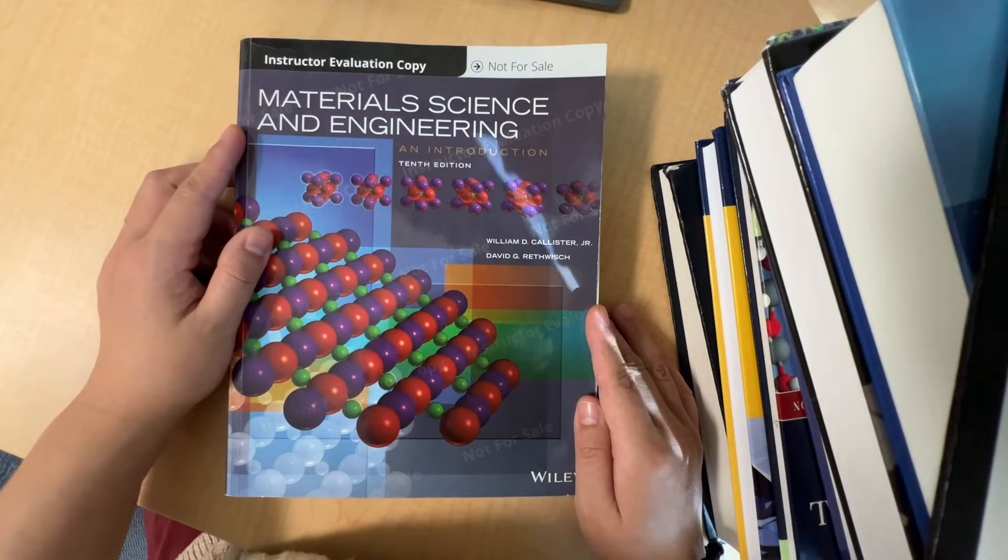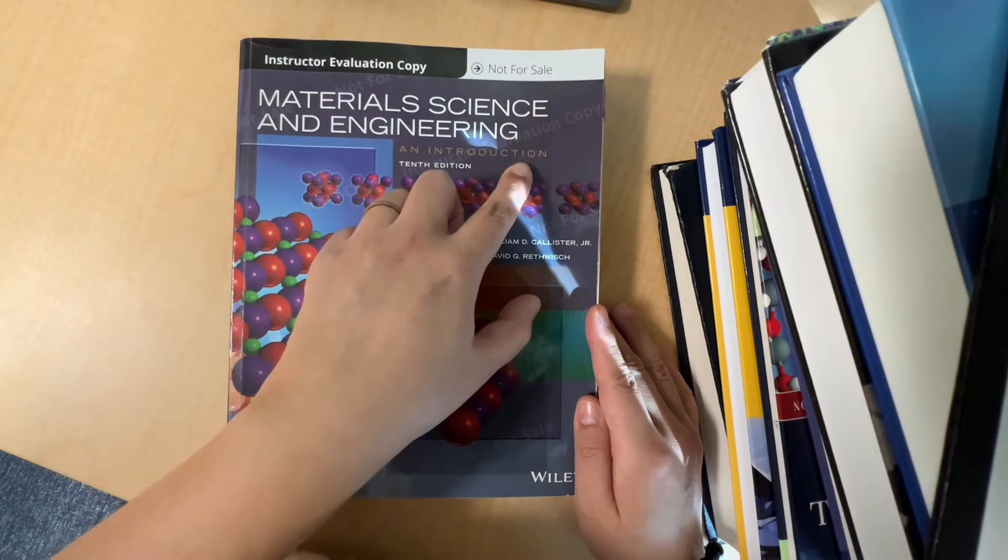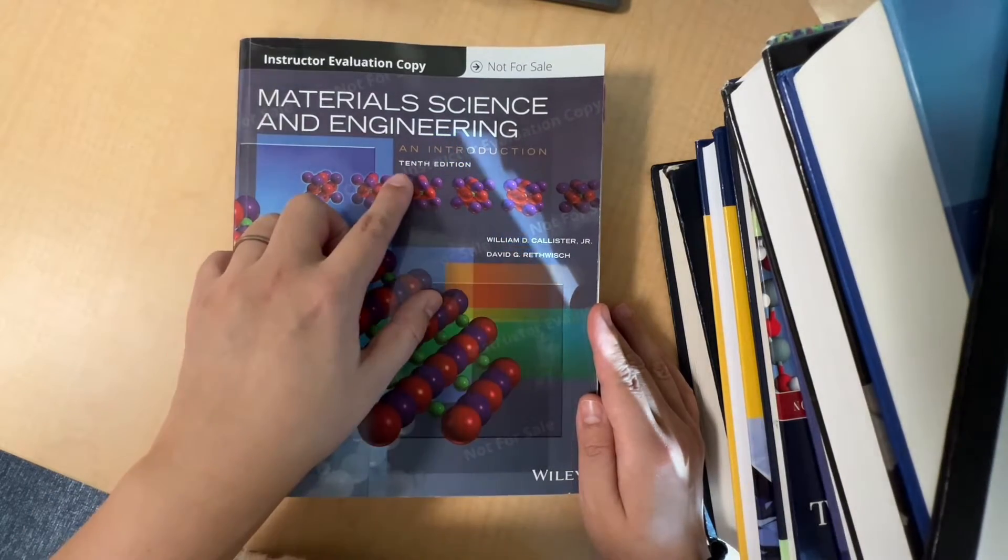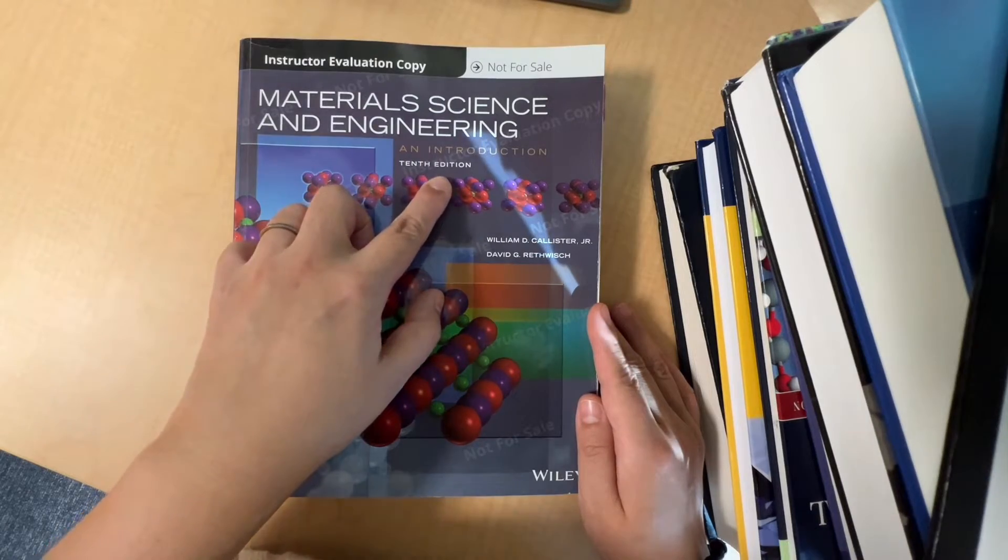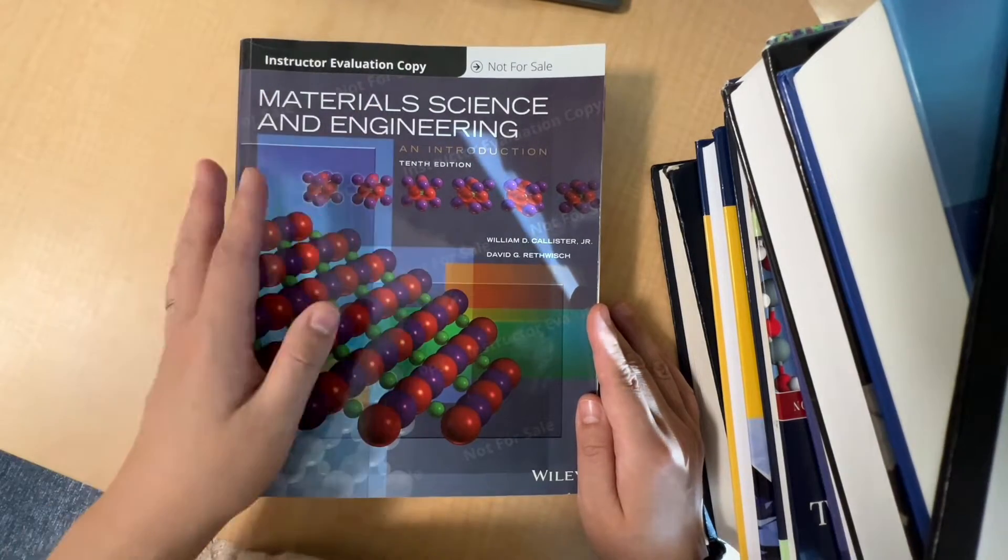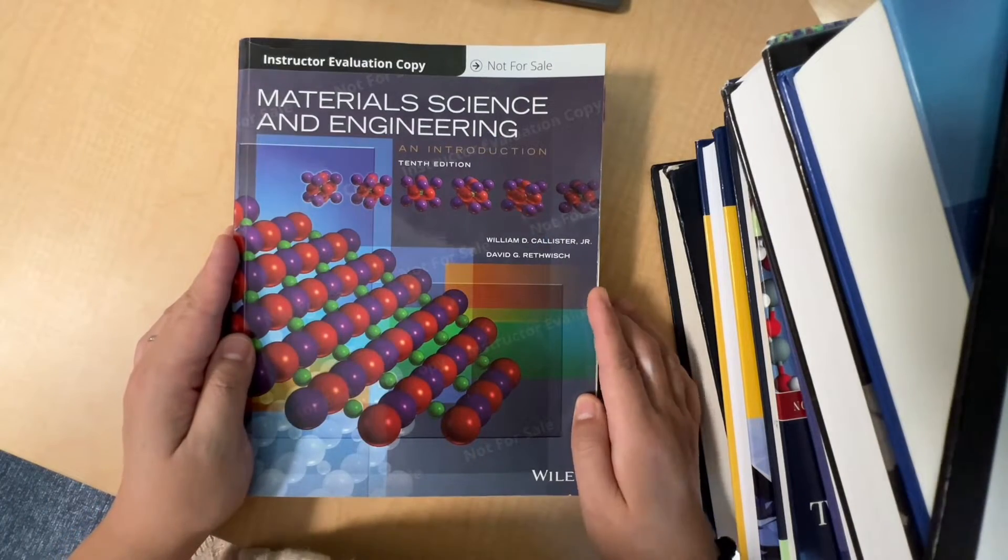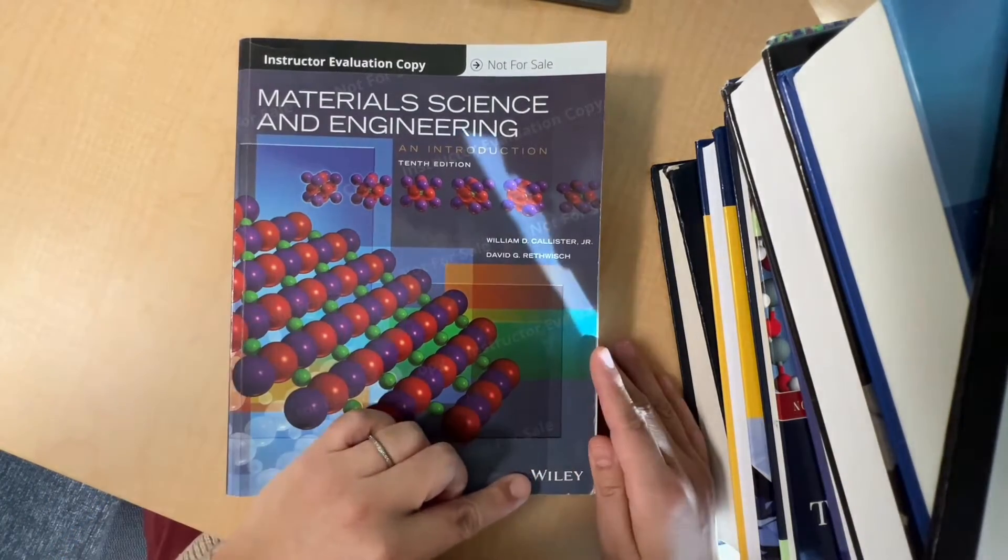I'd like to start the series by introducing this textbook, Materials Science and Engineering: An Introduction, by William Callister and Derek Rathwish. This book has come to the 10th edition. My copy is an instructor evaluation copy. If you purchase it, you can buy a hard copy for general usage or a digital version from WileyPlus.